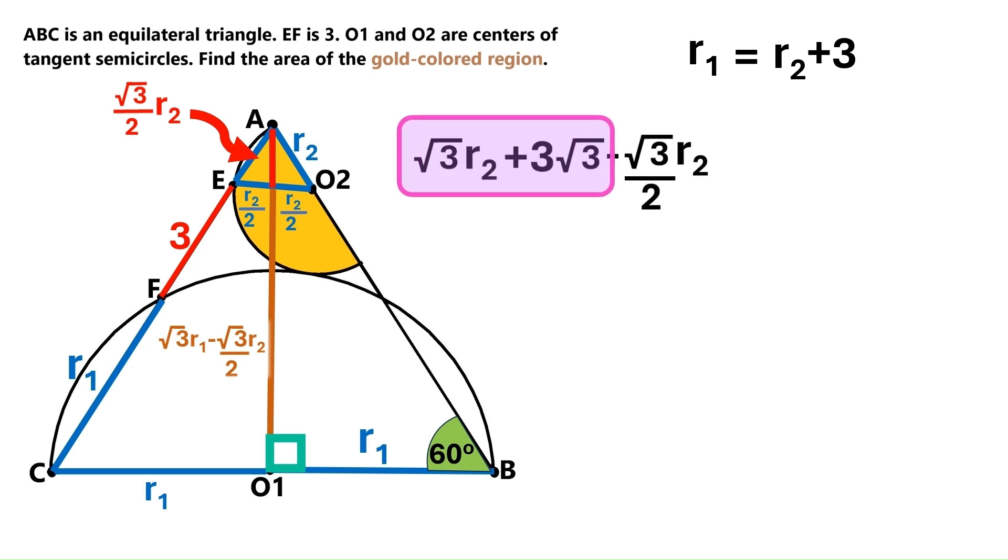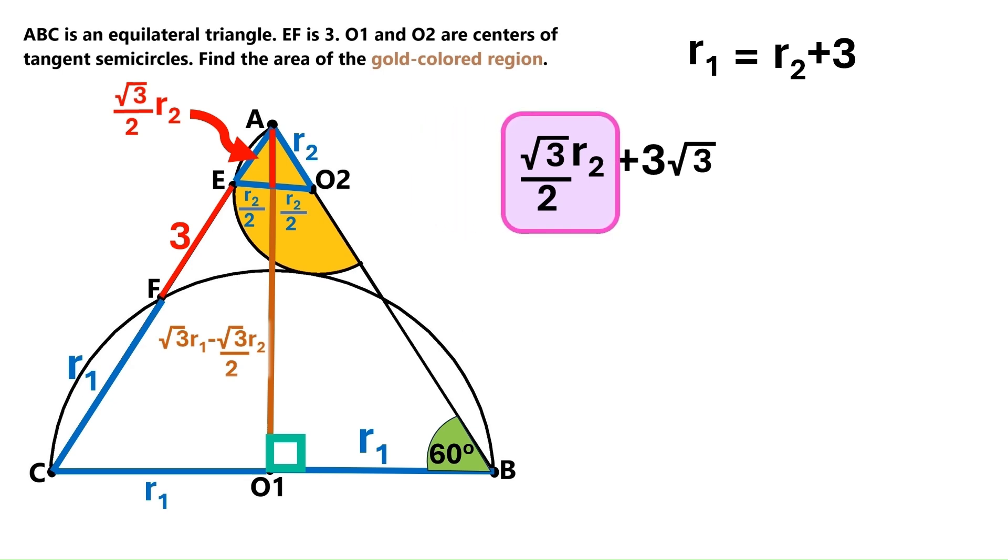And we can open up the brackets like this. Next, we subtract these two. And we get radical 3 over 2 times R2. Now, we have a better looking value for the brown segment. Let's put it down here.